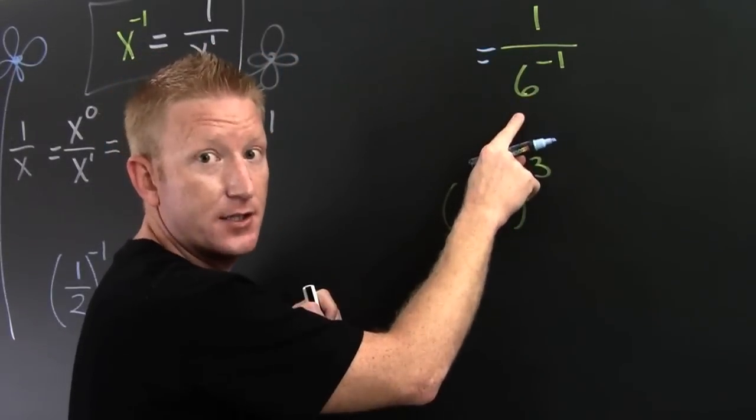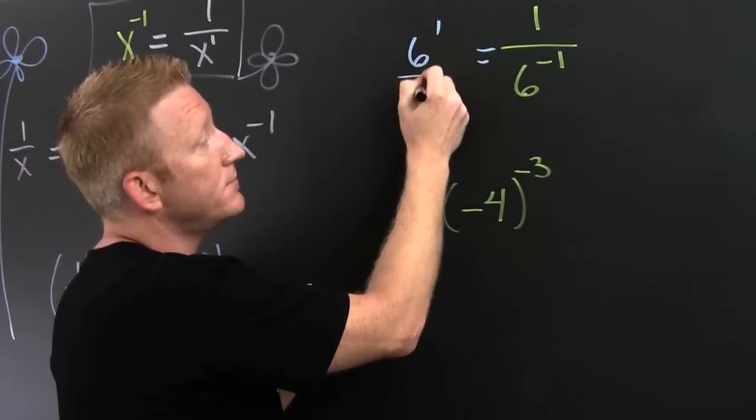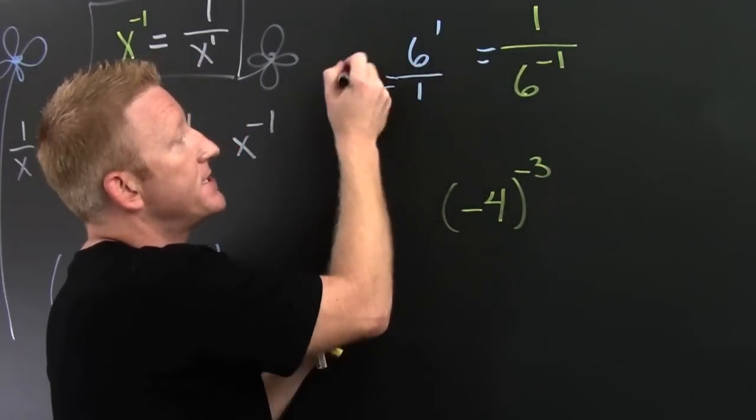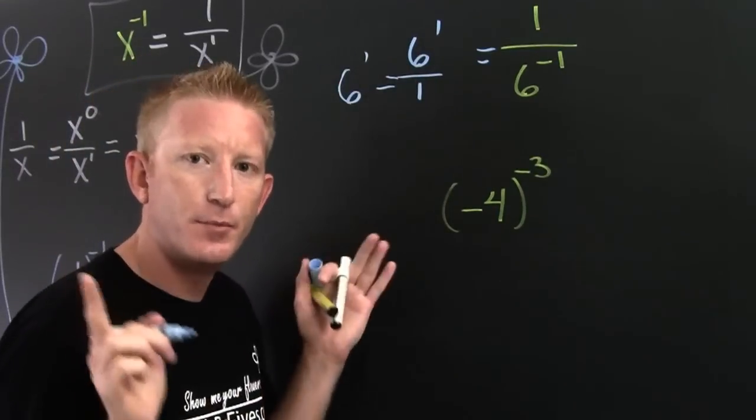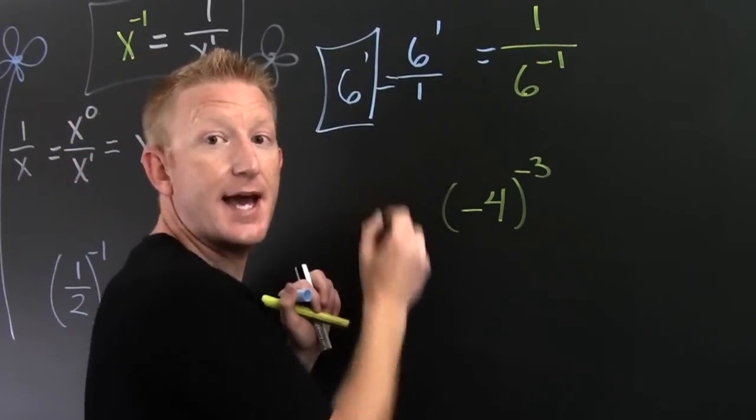Doesn't like it in the denominator. He moves up to the numerator. 6 to the 1, or the same thing as 6. Now that was kind of like moving backwards. But you could see this as, stop right there.